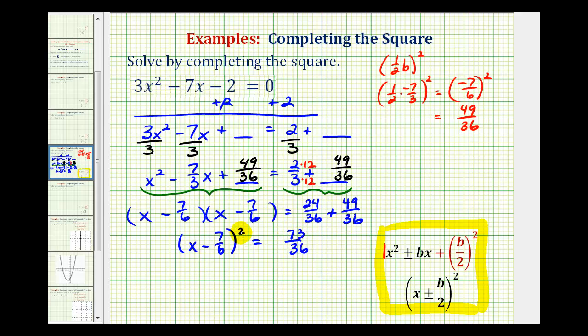Now we can undo the squaring and solve for x by taking the square root of both sides of the equation. We'll take the square root of the left side, the square root of the right side. Remember, we do have to have a plus or minus sign here to obtain all solutions.